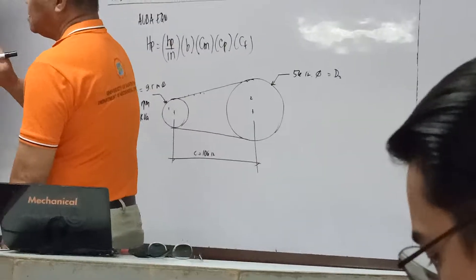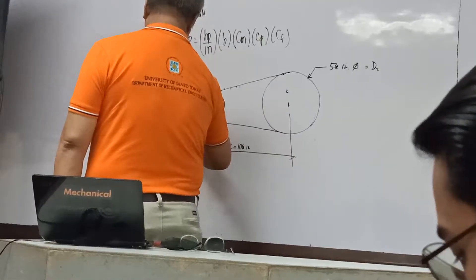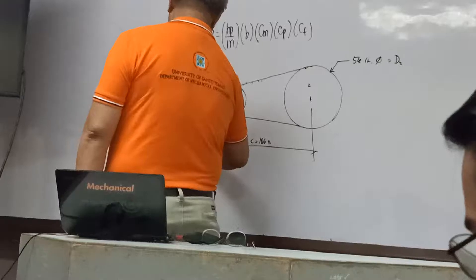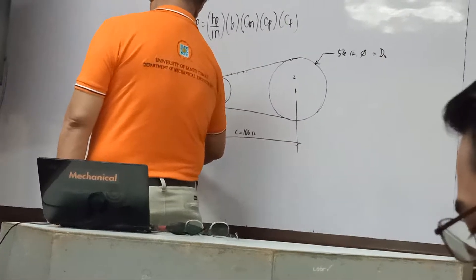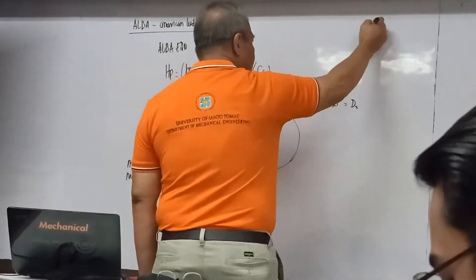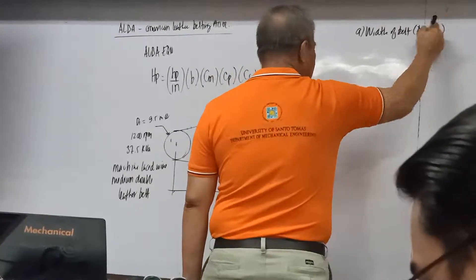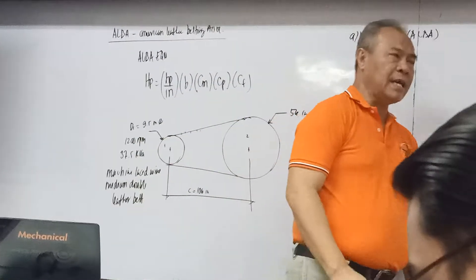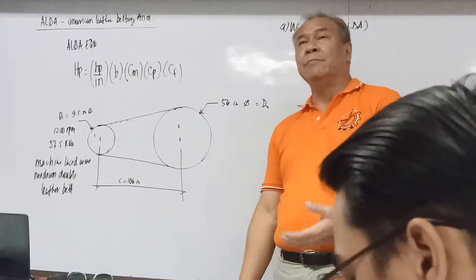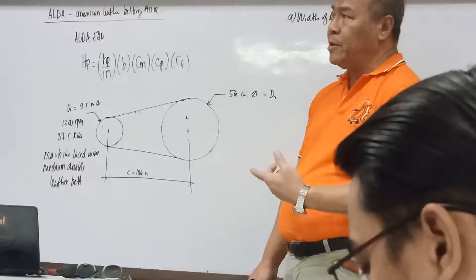We are using a machine-laced, medium double leather belt — which can be heavy, medium, or light service. First, let's determine the belt width using the available table. We first determine the horsepower. The driving system is a diesel engine which generates 37.5 kW (since 37.5 kPa equals 37.5 kilowatts). We need to convert this to horsepower.